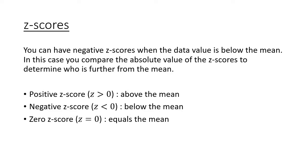We can have negative z-scores. The deviation from the mean can certainly be negative, just like it was with previous examples. If you want to see who's further from the mean, you compare that absolute value. If you end up with a positive z-score, or z is bigger than zero, that means you have a data point that's bigger than the mean or above the mean. If you have a negative z-score, or z is less than zero, you have a data point that's smaller than the mean or below the mean. If your z-score is zero, that means you are the mean. That data value is equal to the mean.